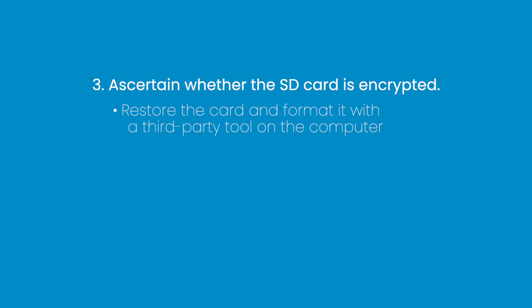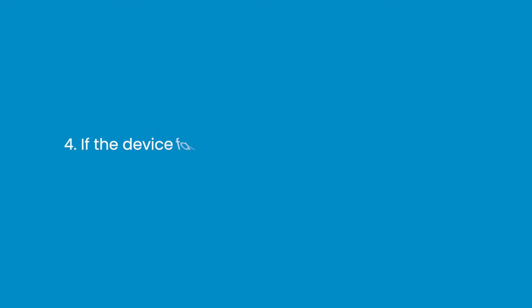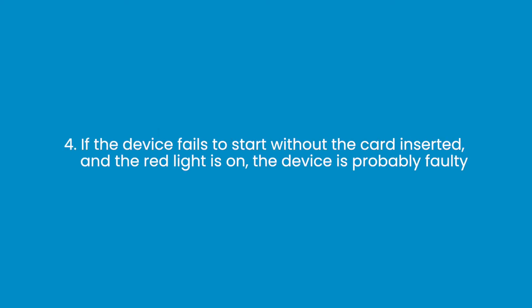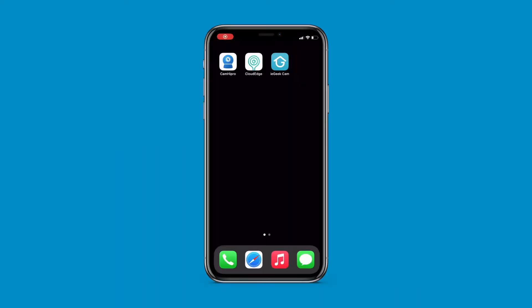Reinsert the SD card and restart the camera after deleting the former device, then reconnect the device. 4. If the device fails to start without the card inserted and the red light is on, the device is probably faulty. Step 3: set up the SD card, making it compatible with the ieGeek security camera.